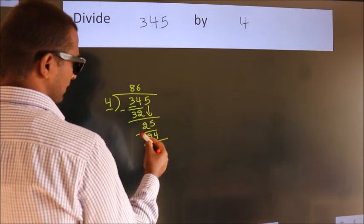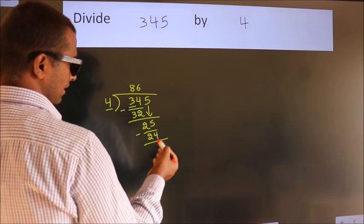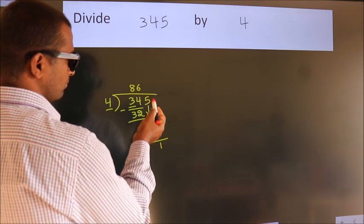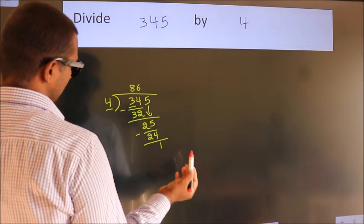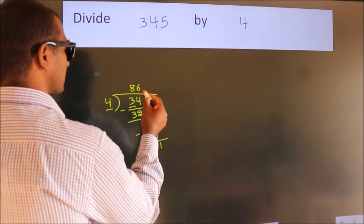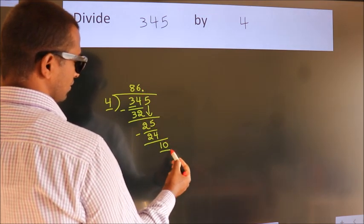Now we subtract. We get 1. After this no more numbers to bring down, so what we do is we put dot, take 0. So 10.